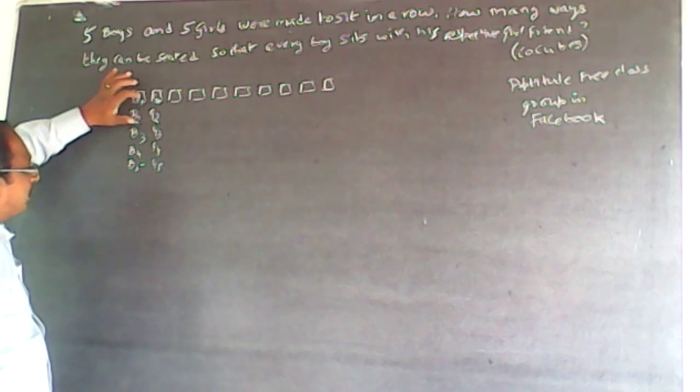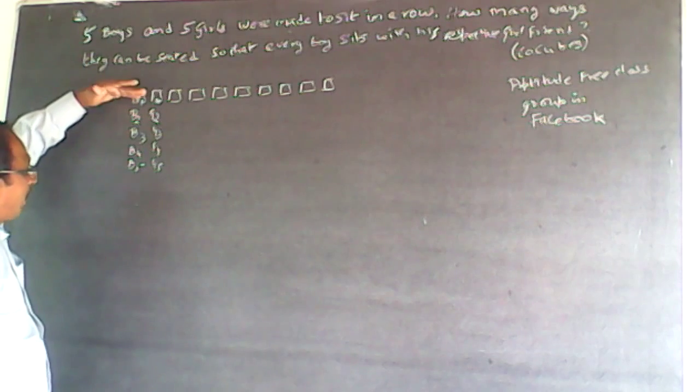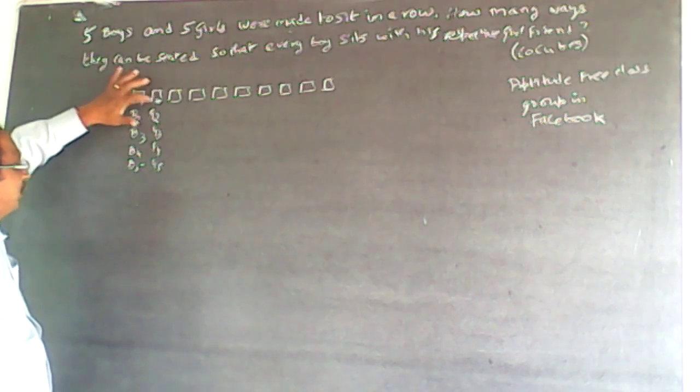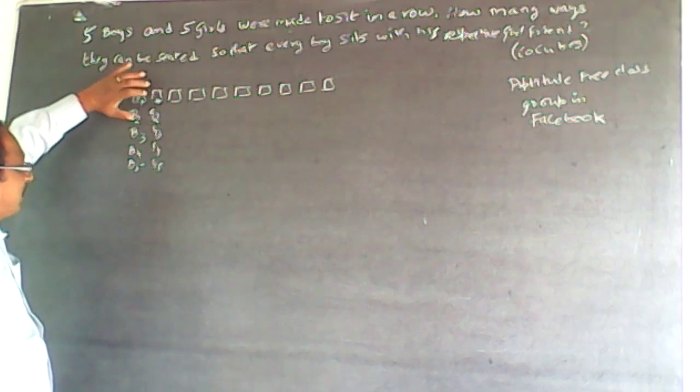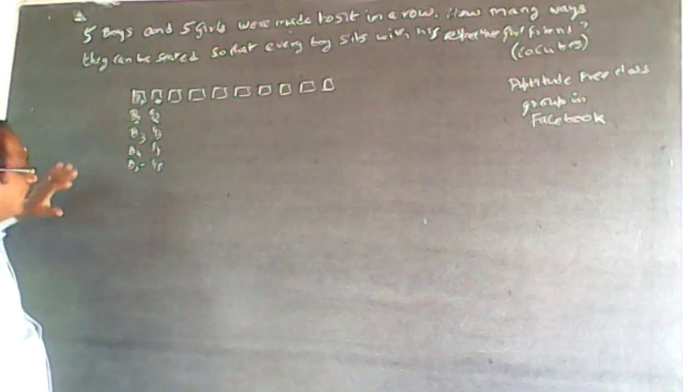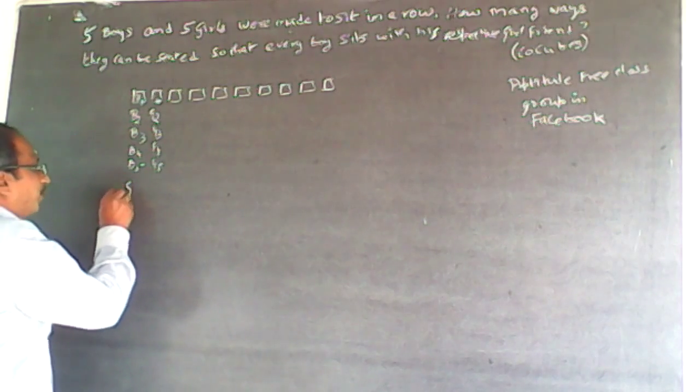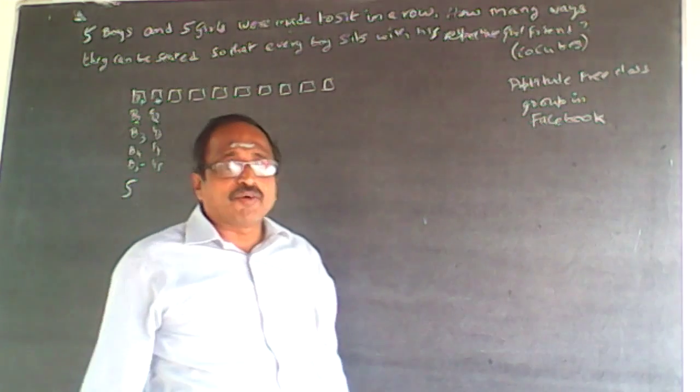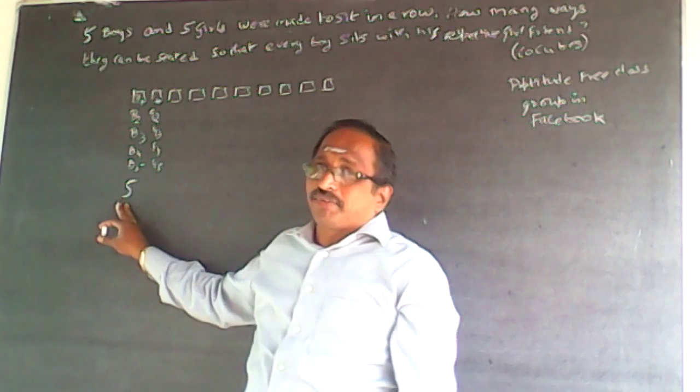That is, whichever boy is there, his respective girlfriend will have to be here. Supposing this fellow's girlfriend is G1, then B1, G1, I am just taking it as consideration. So if B1's girlfriend is G1, she has to be here. Supposing B2 is here, G2 will have to be here. So this position can be occupied by any one of the five boys. This first box can be occupied by any one of the five boys.